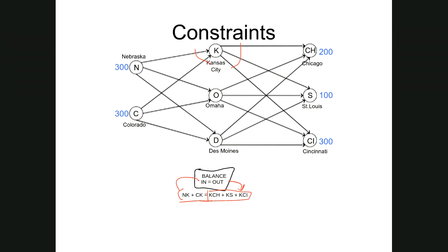The same pattern applies for Omaha: potatoes come in from Nebraska and Colorado, and go out to Chicago, St. Louis, and Cincinnati. And for Des Moines: potatoes come in from Nebraska and Colorado, and go out to Chicago, St. Louis, and Cincinnati. These are our three balance constraints — one for each transshipment point.